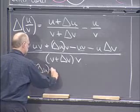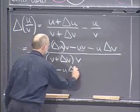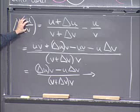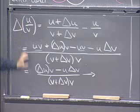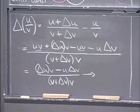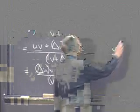All right. So I cancel these. And what I'm left with then is delta u times v minus u times delta v. And all this is over v plus delta v times v. OK, there's the difference, there's the change in the quotient. The change in this function is given by this formula. And now, to compute the derivative, I want to divide by delta x and take the limit. So let's write that down.